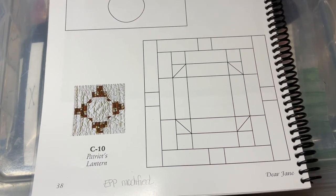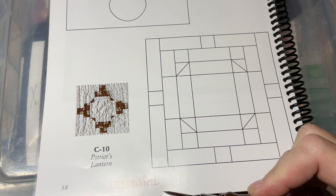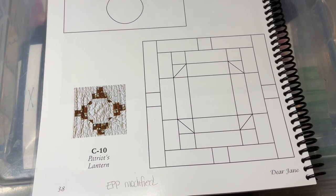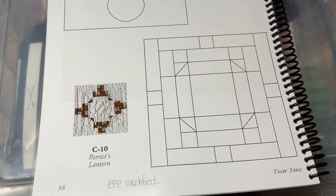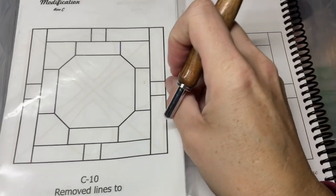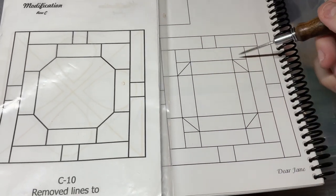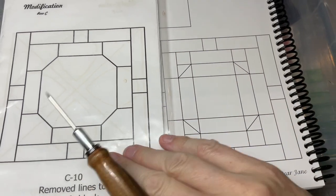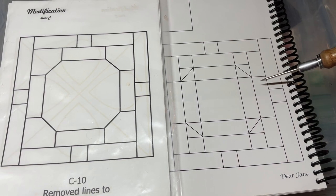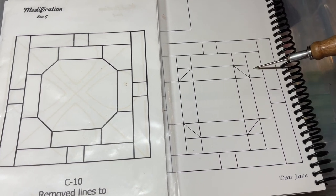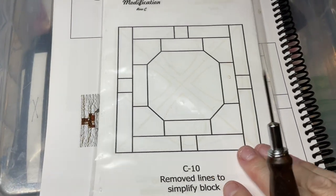Now we're up to C10. C10 is another modified block that's going to have a different layout in the book. You can see here you've got a lot of pieces in this corner, and what they did for paper piecing is they've simplified these corners into one piece. So you've got an octagon, and then you've got your rectangles and your corner pieces and your squares and all that jazz.